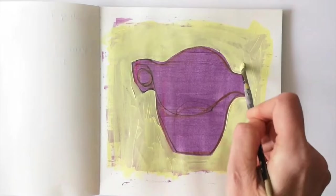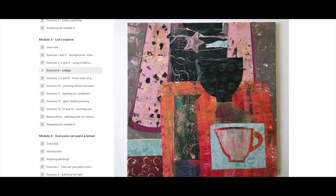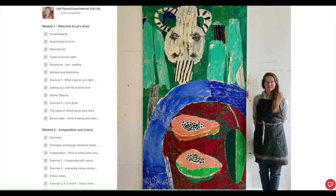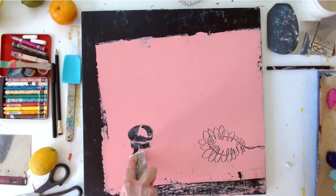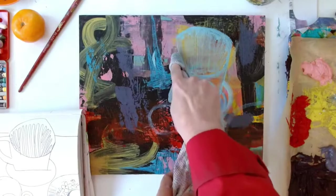Module three is 'Let's Explore.' We really experiment looking at backgrounds, line and shape, using the jelly plate, collage with the papers that we make, exploring painting on different types of surface — paper and cardboard. You can see what exciting work it's possible to do on cardboard; this is Rosa Roberts who gave me permission to use this photo. We'll also try painting without brushes, giant sketch painting, painting over a variety of different backgrounds, and finally assessing what you've enjoyed and what you'd like to explore further.